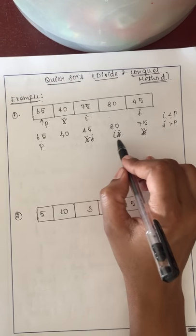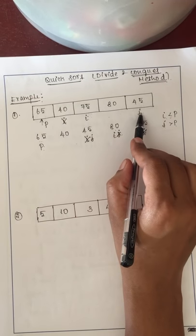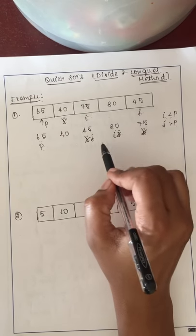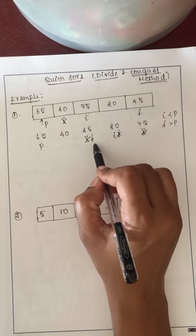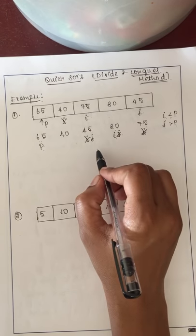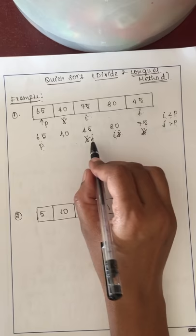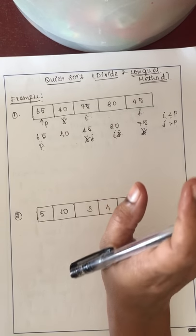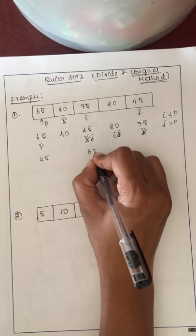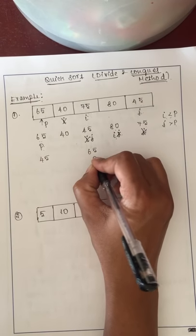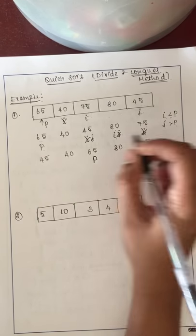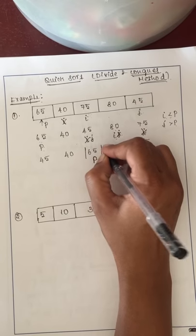We cannot exchange i and j here because we can only exchange them when i is less than j. Since j is less than i, instead of exchanging we swap j and the pivot element directly. When i and j overlap, we swap the j element with the pivot element. Now 45 comes to the pivot position and 65 moves to its correct position.